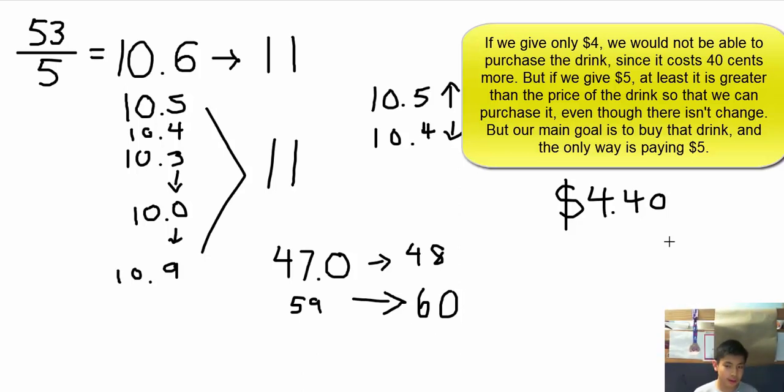So therefore, we would give all five to the cashier and we would get the drink. So this is how, because since it's $4.40, it may seem that we need to round down to four. But then, in reality, the price of the drink is five, $5.